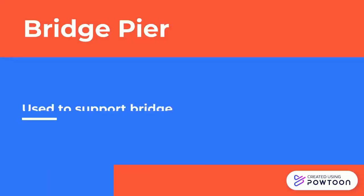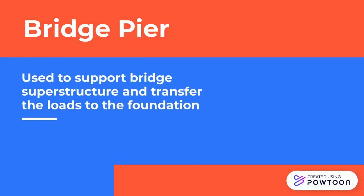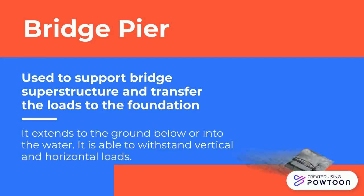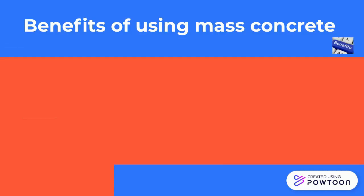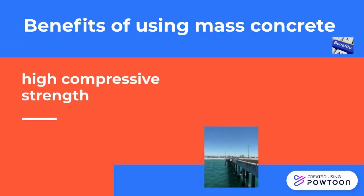Bridge pier is used to support bridge superstructure and transfer the loads to the foundation. It extends to the ground below or into the water, and it is able to withstand vertical and horizontal loads. With regards to the function of bridge pier, mass concrete is used because of its high compressive strength.